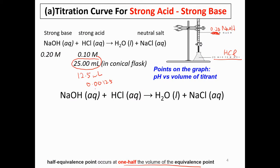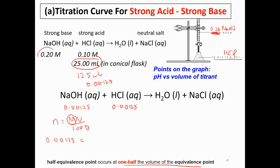To reach the half-equivalence point, the number of moles of sodium hydroxide needed is still the same: 0.00125. Now we use moles equals MV over 1000, with moles 0.00125 and the new molarity of 0.2 for the base.